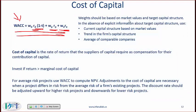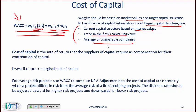The weights should be based on market values and target capital structure. In the absence of explicit information about target capital structure, you can use the current capital structure based on market values, the trend in the firm's capital structure, or you can look at competitors and consider their capital structure. The cost of capital is the rate of return that suppliers of capital require as compensation for their contributions of capital.